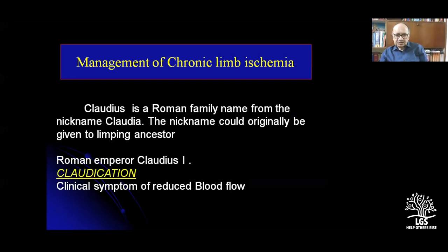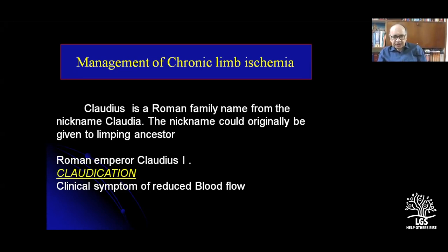Claudius is a Roman family name from the nickname Claudia. That is why claudication means there is limping — limping because of vascular occlusions. This is more attributable to TAO, but TAO is less and less common. You don't get claudication in TAO to the extent you get it in major vessel disease. TAO is more distal, lower down.